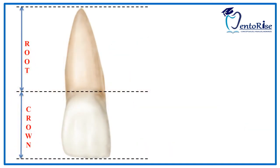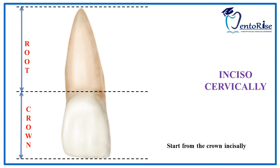Let's look at our first approach, that is the incisocervical approach. The term incisocervically gives us two impressions. First, the term 'inciso' implies that we are dealing only with the incisors and canines. If you are not clear with this concept, please do check out our video on surfaces and ridges of the tooth — the link is given in the description box below. Second, incisocervically also implies that you have to start from the incisal ridge and then move in a cervical direction.